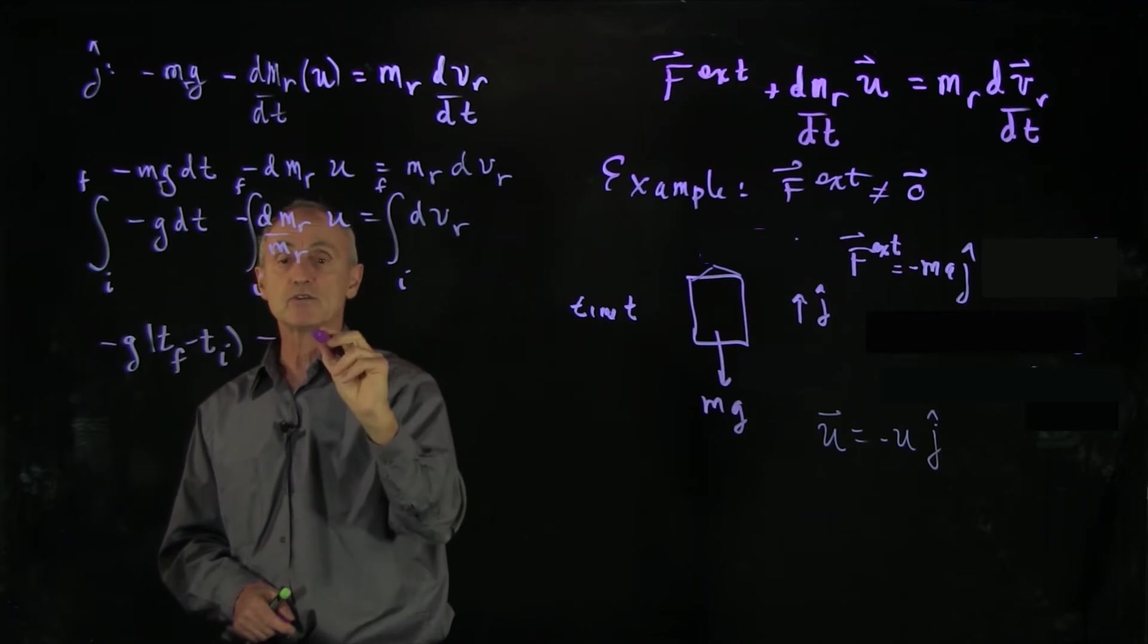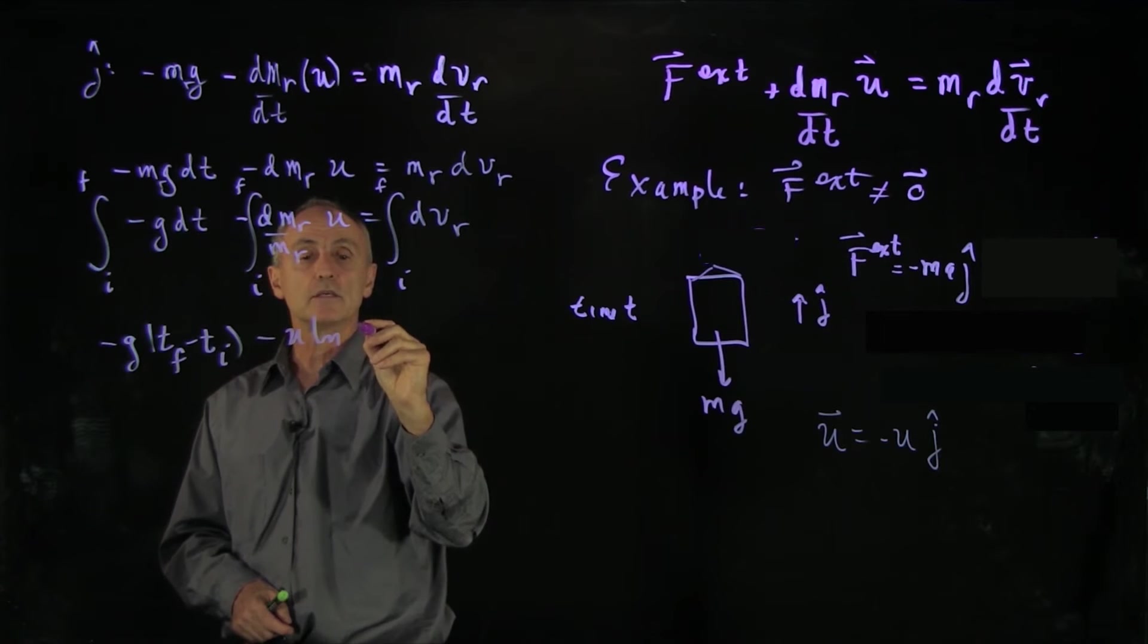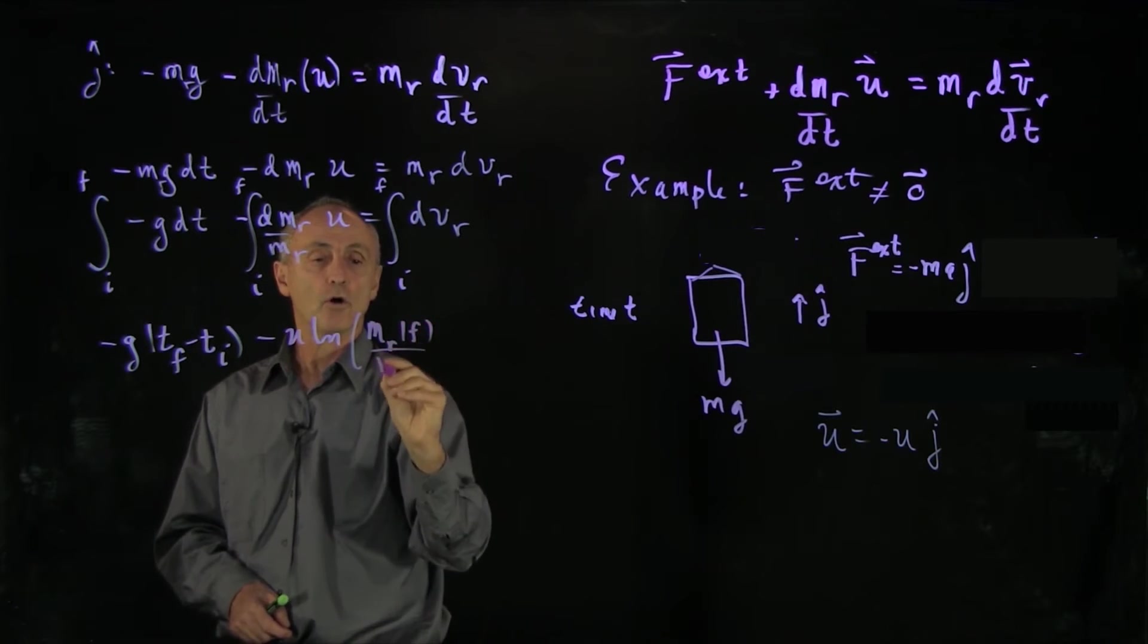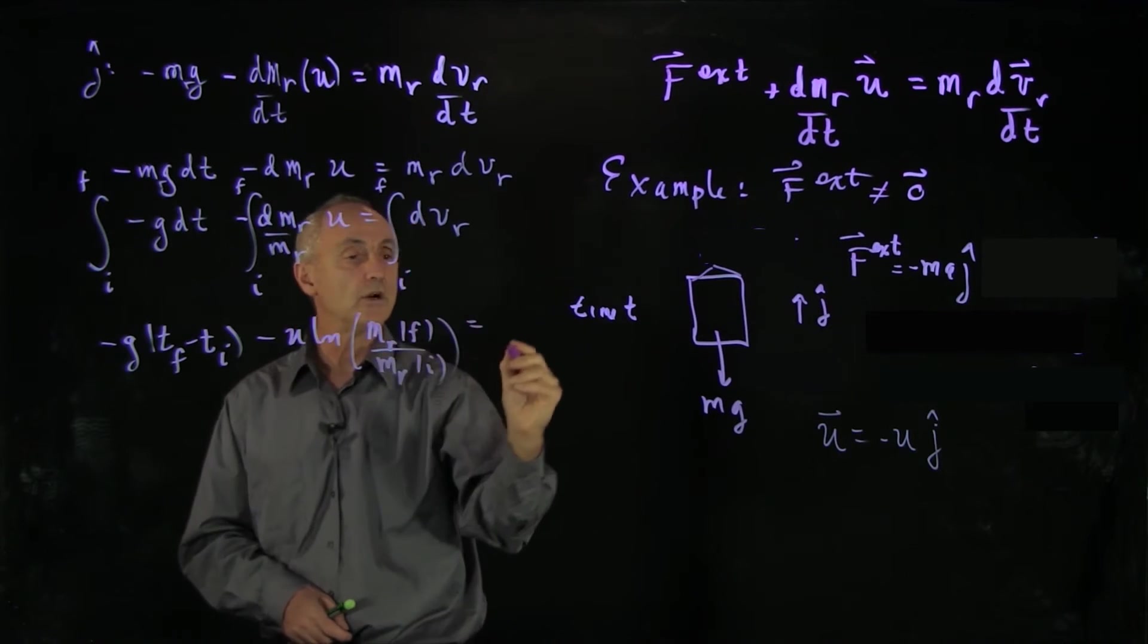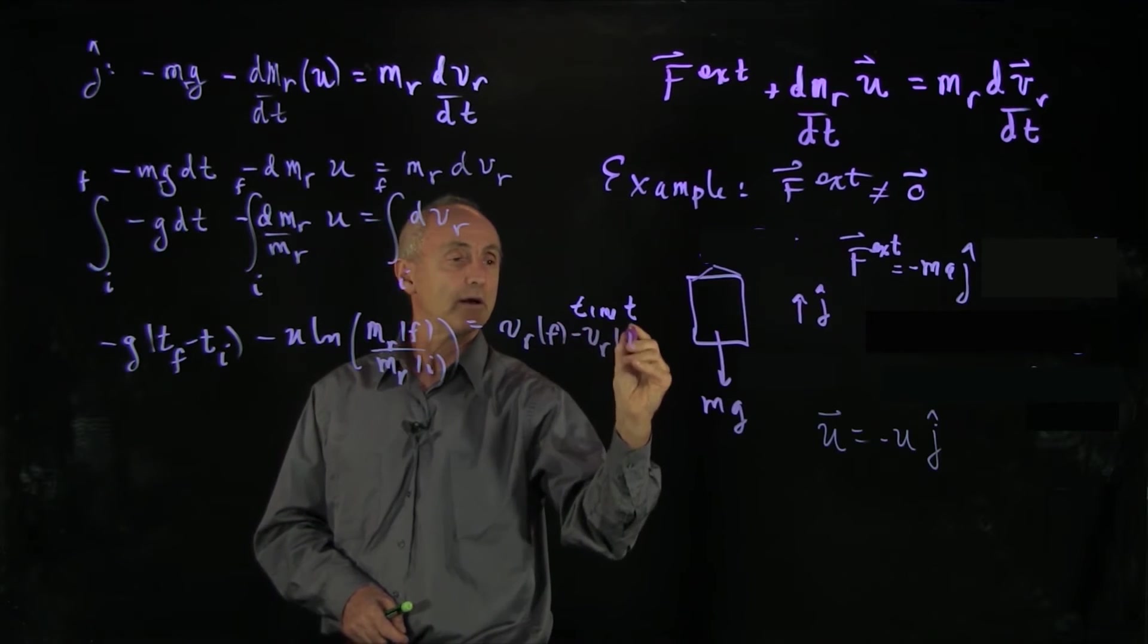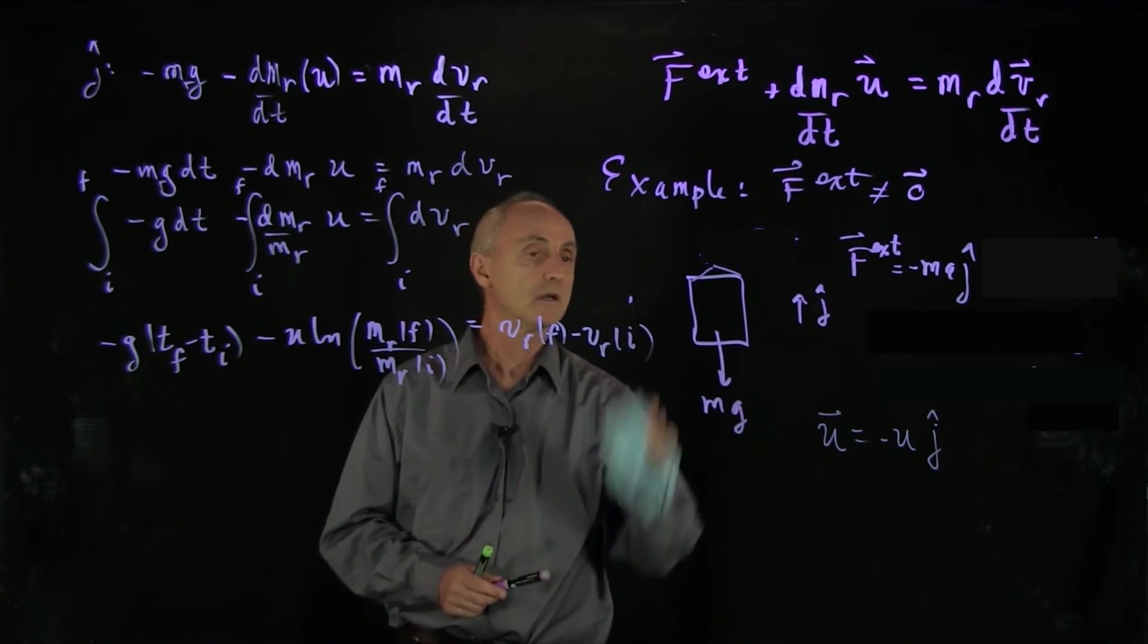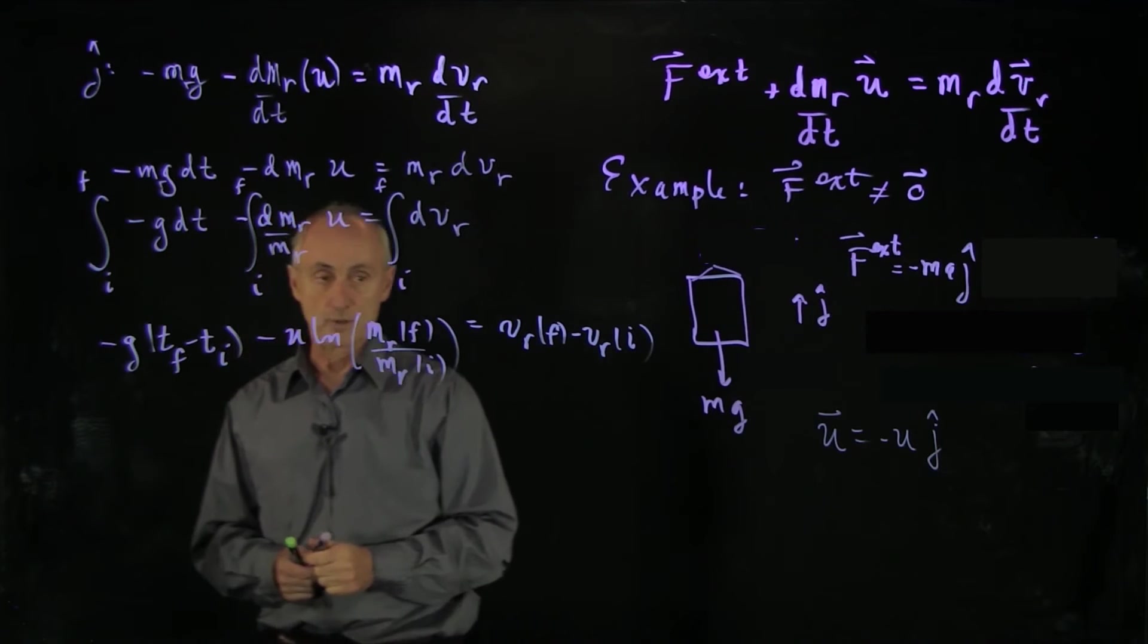Here we're integrating mass. So that's minus mu natural log. And I'm going to write this as mr final over mr initial. And over here we have vr final minus vr initial. And let's just remove that time t. And so now here is our rocket equation.